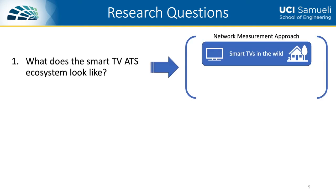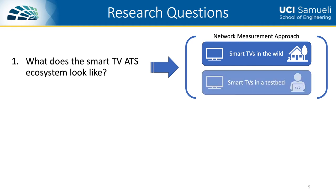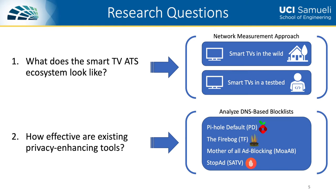So with that, our research questions become the following. First, what does the smart TV advertising and tracking services ecosystem look like? To answer this, we take a network measurement approach — we analyze data collected from smart TVs used by real users, which we call the in-the-wild dataset, and we instrument two smart TV platforms in a testbed setting, which we call the testbed dataset. Second, we ask how effective are existing privacy-enhancing tools. Here we analyze DNS-based blocklists, as these are universally applicable across all smart TV platforms, and we also use four blocklists to label domains in our datasets as advertising and tracking services or not.